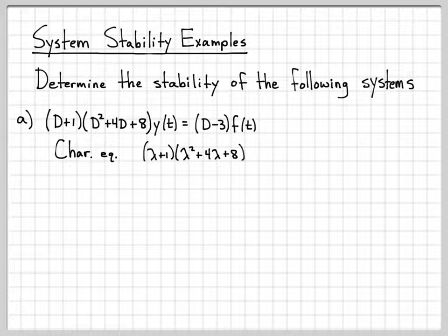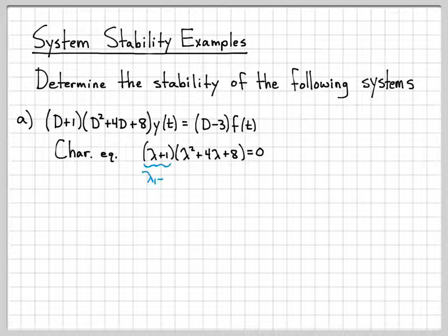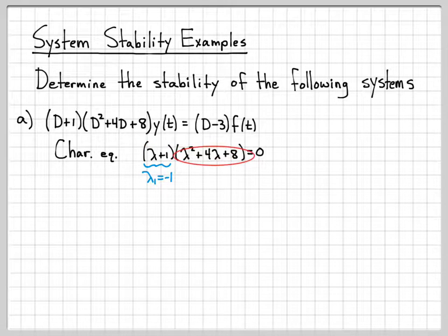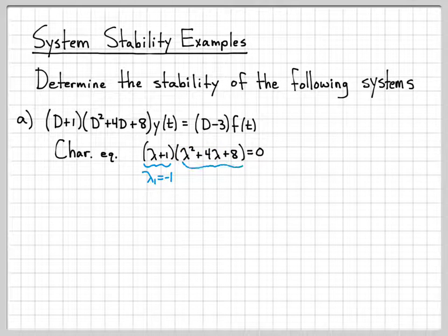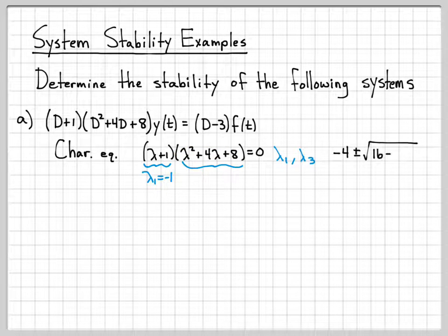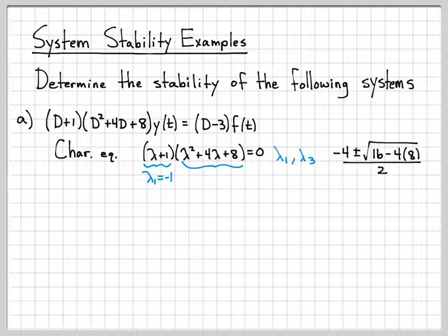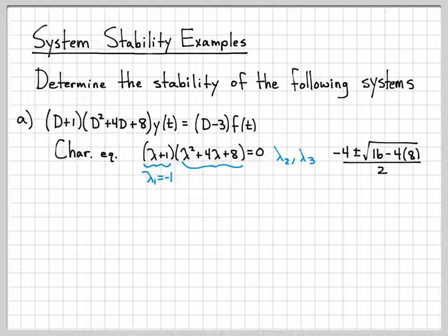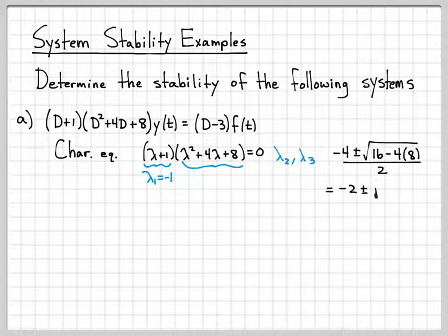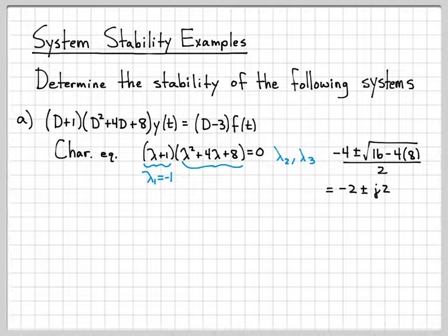And then solving for these roots is pretty trivial. Lambda 1 is equal to negative 1, because that goes to 0 when lambda is equal to negative 1. And then finding the roots of this is pretty simple. We'll call those lambda 2 and lambda 3, which I can find by just evaluating the quadratic equation. So minus b plus or minus b squared minus 4 times 8 over 2a.